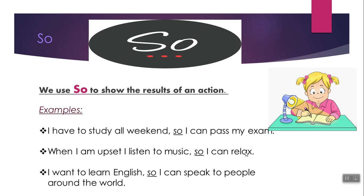Let us see a third example. I want to learn English — so what? What will happen when you learn English? So I can speak to people around the world. The result is that you can speak to people around the world. I notice one very important thing: the comma. This comma comes before 'so'. So before I write 'so', I have to split the sentence using the comma. I use a comma before 'so'.